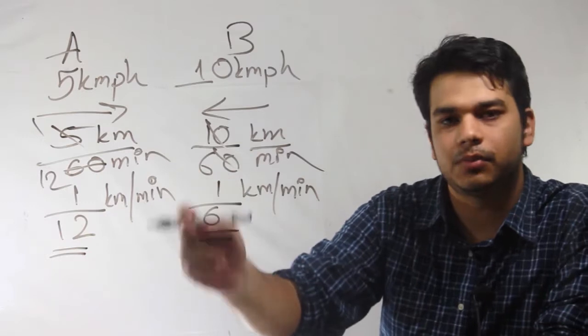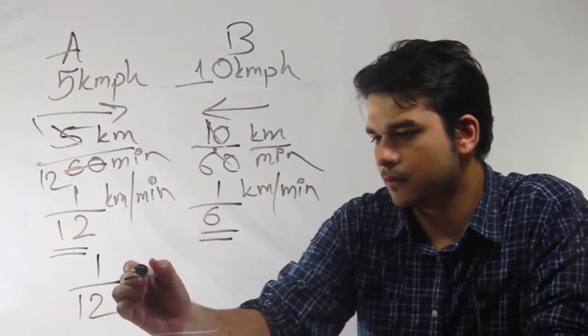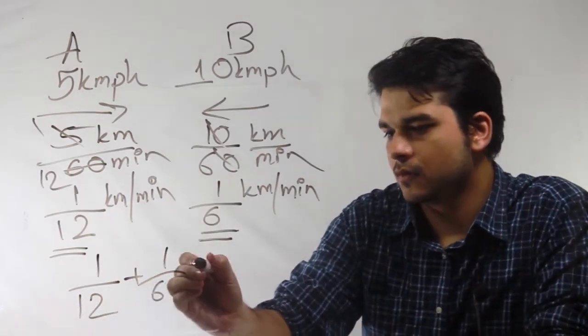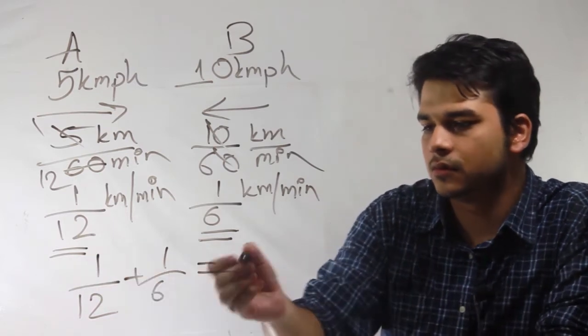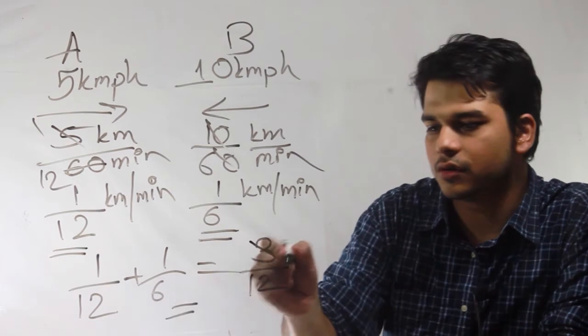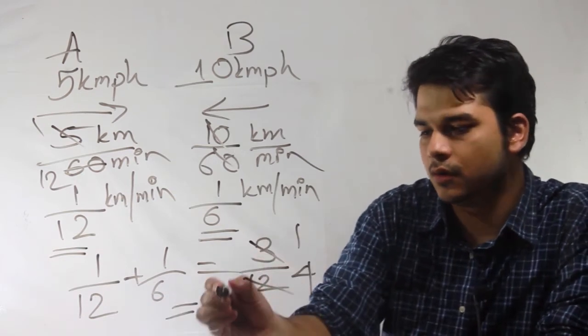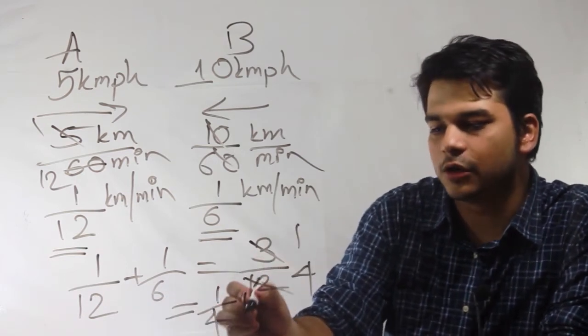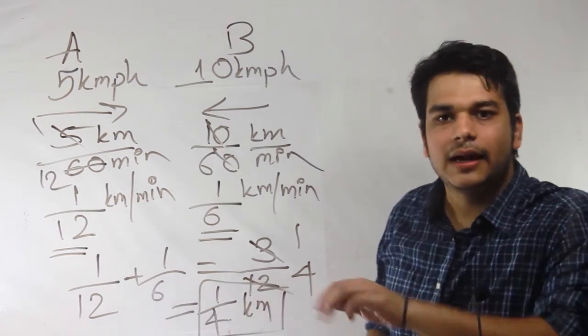So the total distance between them will be 1 by 12 plus 1 by 6, which is 3 by 12, or this will get cancelled out, 1 by 4 of a kilometer. And that would be your answer.